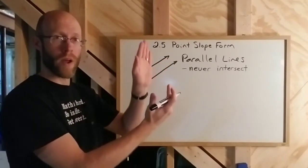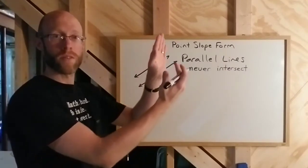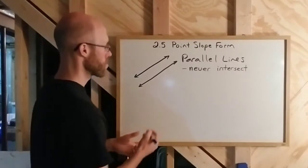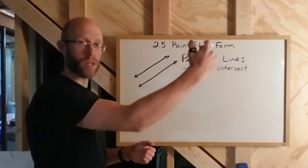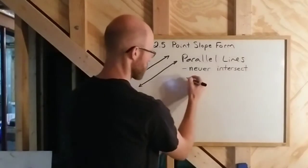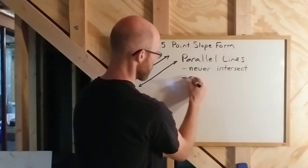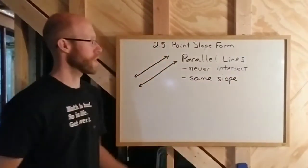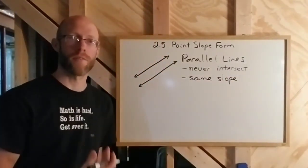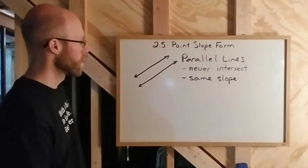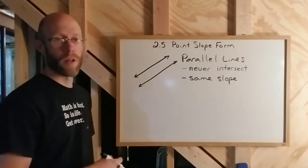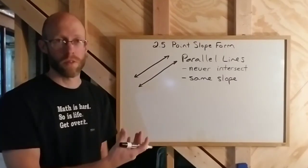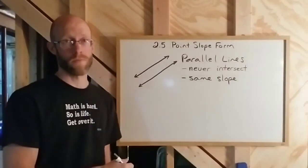As one rises, the rate at which one rises is the same rate at which the other rises. So the rise over run ratio is going to be the same — they're going to end up having the same slope. So if the slope on one of the lines is two-thirds, then the slope on the other line is also two-thirds.